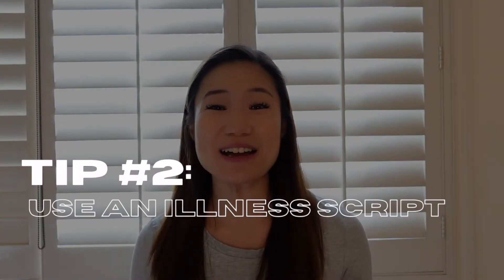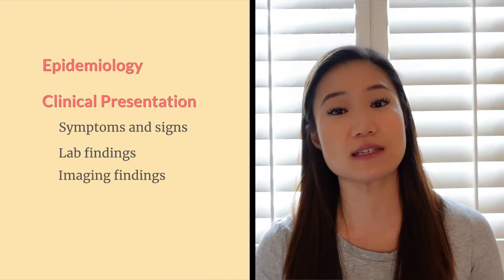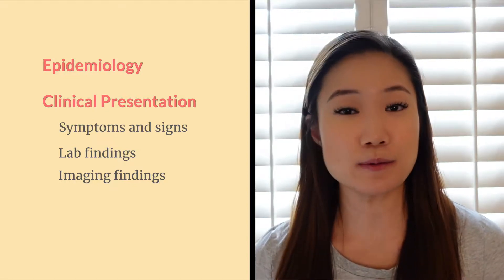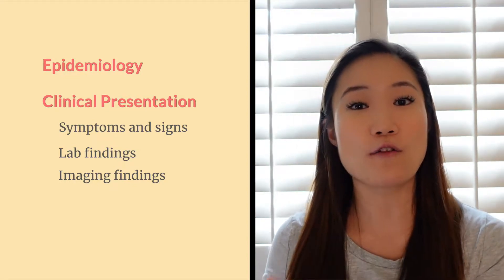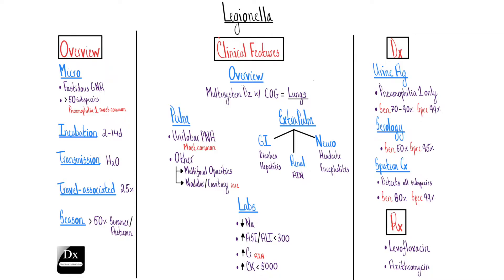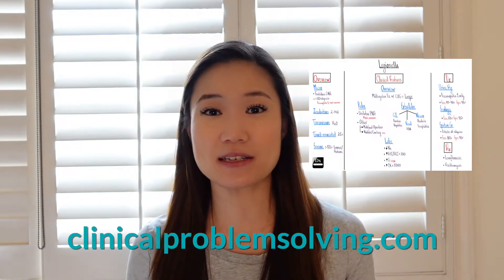Tip number two: design your talk after an illness script. An illness script is a summary of all the key features of a disease, including the epidemiology and the clinical presentation — which includes symptoms, signs, lab findings, and imaging findings typical for that disease. It's really good to choose one or two pieces of that to still fit within the five to 10 minute duration. Here's an example of an illness script by the Clinical Problem Solvers. Check out their website because it's an amazing resource — you could probably memorize this illness script or pieces of it to use as your presentation, giving credit where credit is due.